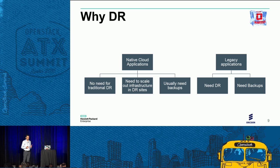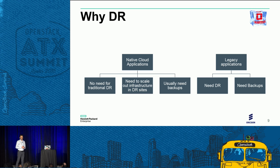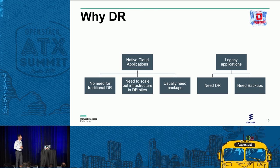Starting from the workload perspective, there are two big paradigms. One is the native cloud application, which is usually designed to avoid the disaster problem — massively scalable, distributed over multiple data centers, multiple rooms, even multiple continents. In this case, little needs to be done for disaster recovery, though there is probably still some need for backups to avoid human mistakes or data loss.